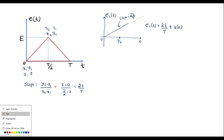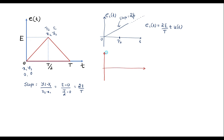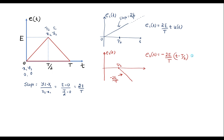Let that be my second signal E2 of t — another ramp signal. At T/2, I will add one negative ramp signal with magnitude minus 2E/T. So E2 of t is like E1 of t but a shifted negative ramp signal. Its slope is minus 2E/T, shifted by T/2 units. I can represent it as: E2(t) = -(2E/T) · (t - T/2) · u(t - T/2).